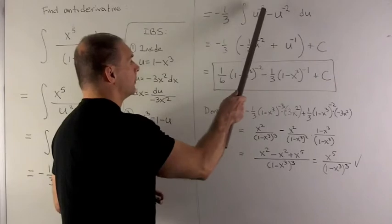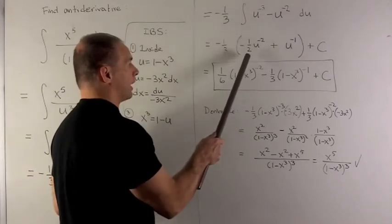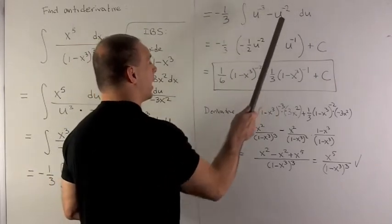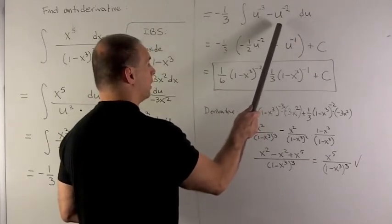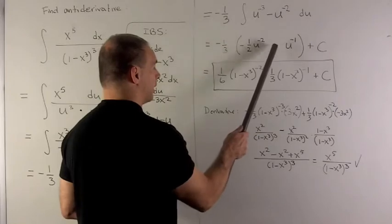So we add 1, gives me minus 2, I flip it over I get minus a half. Here I have minus 2, add 1 gives me minus 1, I flip it over gives me minus 1, hits that minus sign and becomes a plus.